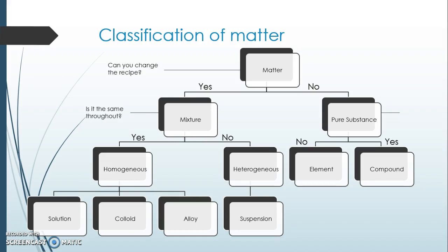In a homogeneous mixture, every single sip would be exactly the same. In a heterogeneous mixture, it's not all the same — it has different parts you can see. Examples include salad, iron mixed with sand, sand and salt, and sand and water.